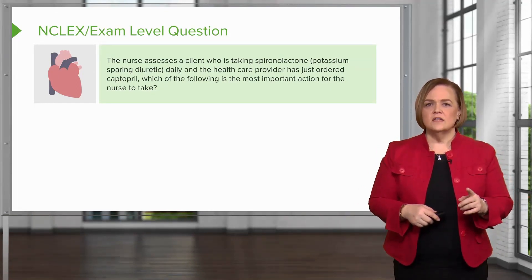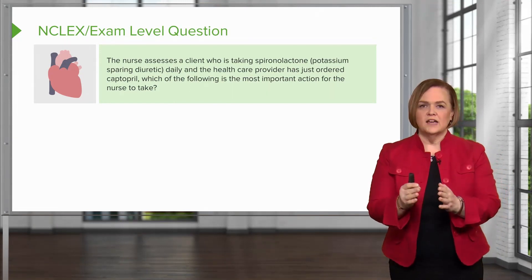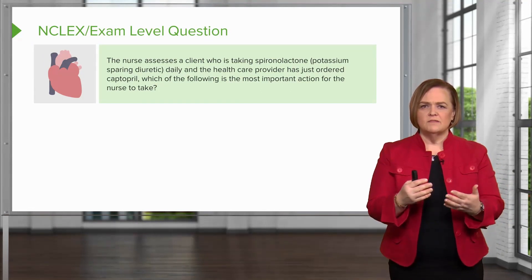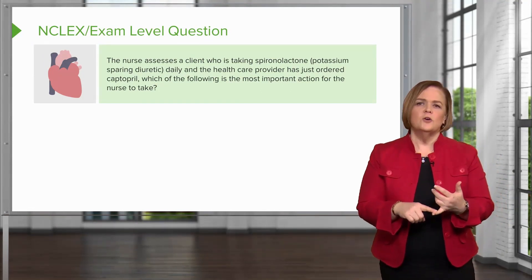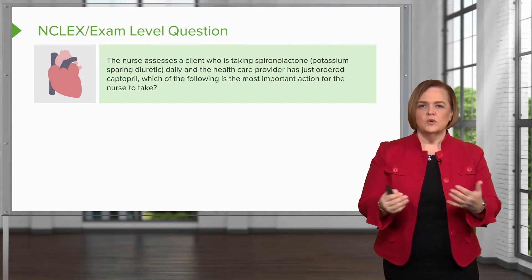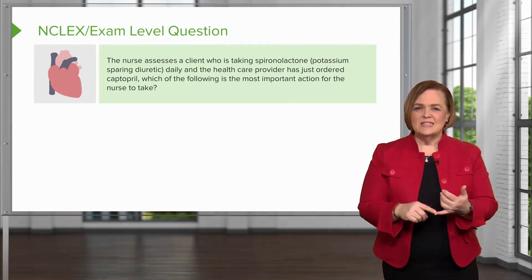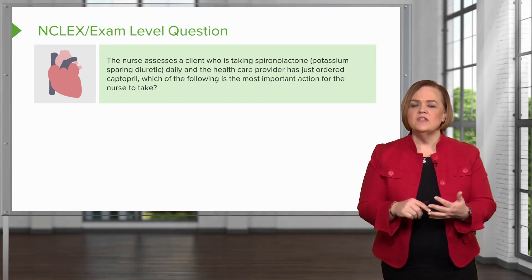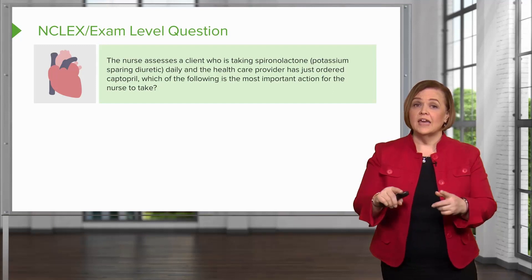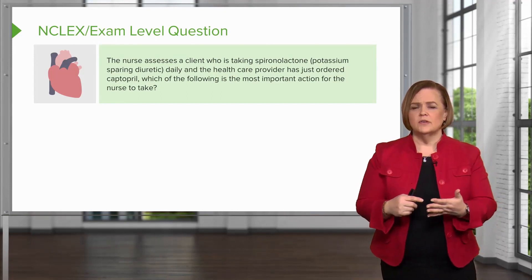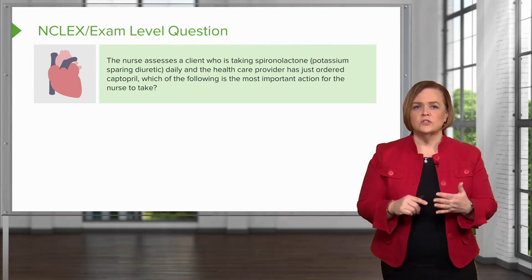The nurse assesses a client who is taking — stop right there. What do I know about this client? Not much. I just know they're taking some medications. They're taking spironolactone, which is a potassium-sparing diuretic. So I'm assessing a client who's taking a potassium-sparing diuretic daily, and the healthcare provider has just ordered Captopril. We know that Captopril is an ACE inhibitor. Which of the following is the most important action for the nurse to take?